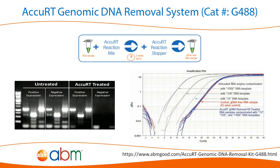To guarantee researchers the cleanest RNA templates for the best results, ABM offers the AccuRT Genomic DNA Removal System. This simple 5-minute single-tube treatment effectively removes any gDNA in an RNA sample, providing researchers with unbiased results.